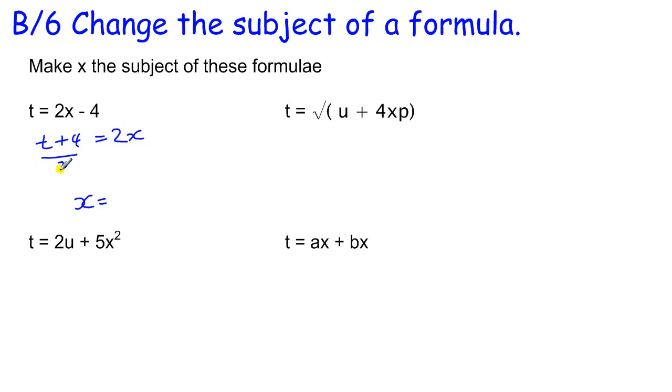So I end up with, if I divide that by 2 and this by 2, I end up with x equals t plus 4 over 2. So that would be my new formula to find x.